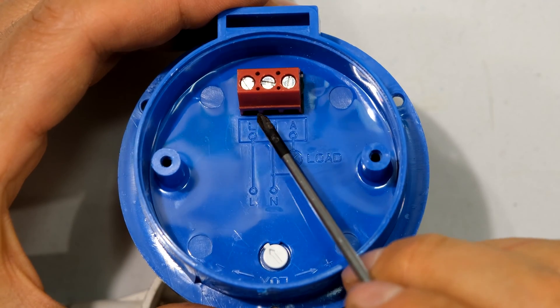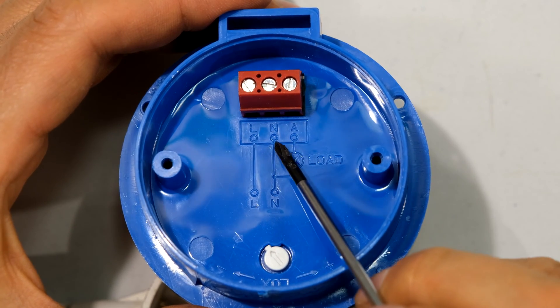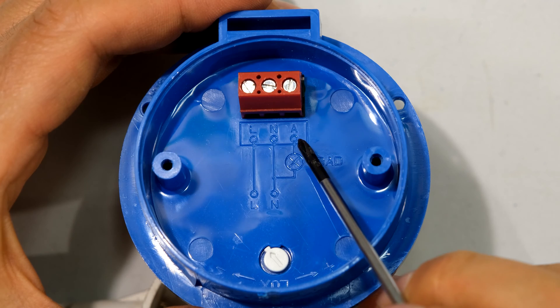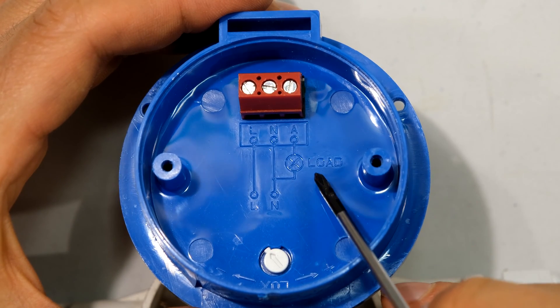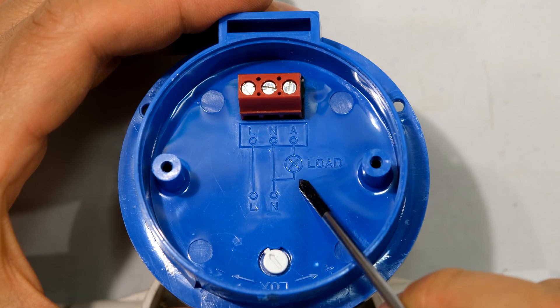Now I need three wires going to my day-night sensor. On this day-night switch, there are three terminals. Notice it says live. So there's the live. Then it says N for neutral. Then it says A for appliance or load.